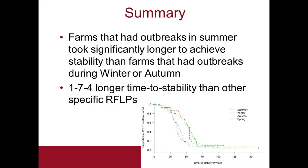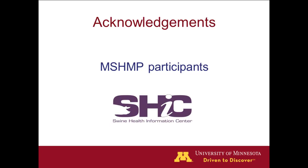In summary, farms that broke during summer took significantly longer to achieve stability compared to those with outbreaks during winter or autumn. The RFLP pattern also matters — outbreaks associated with the 1-7-4 RFLP pattern seem to take longer to achieve stability. I want to acknowledge all the participants of this project, as this analysis would not have been possible without their data, and also the Swine Health Information Center for their support. Thank you — I'll take any questions now.